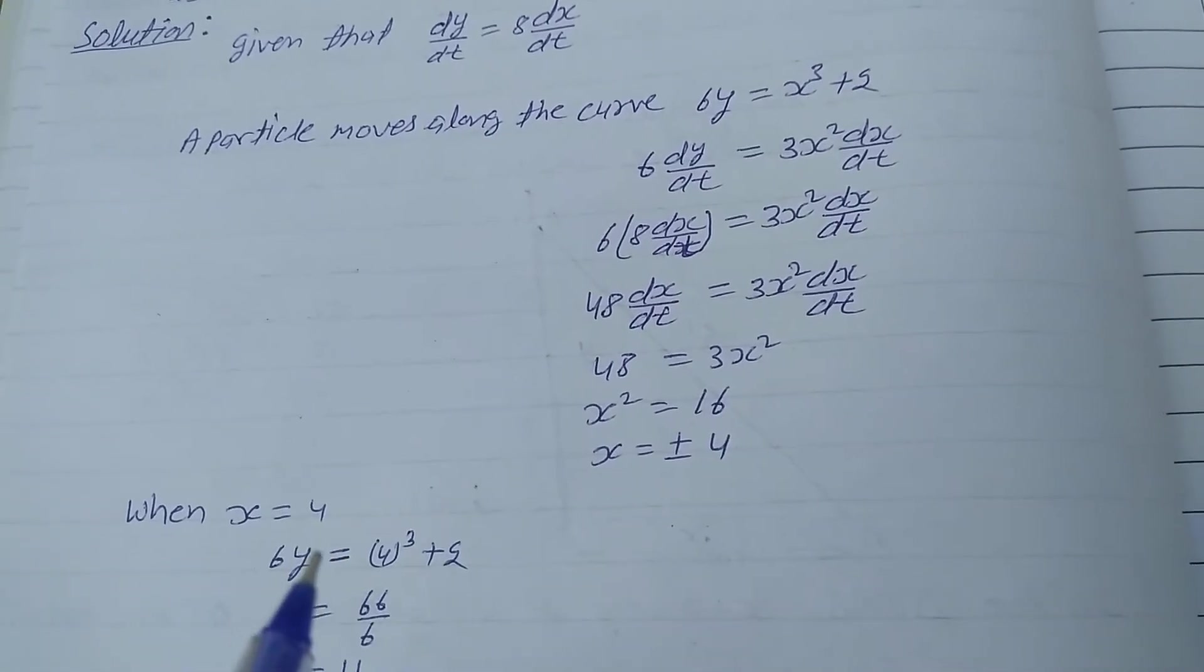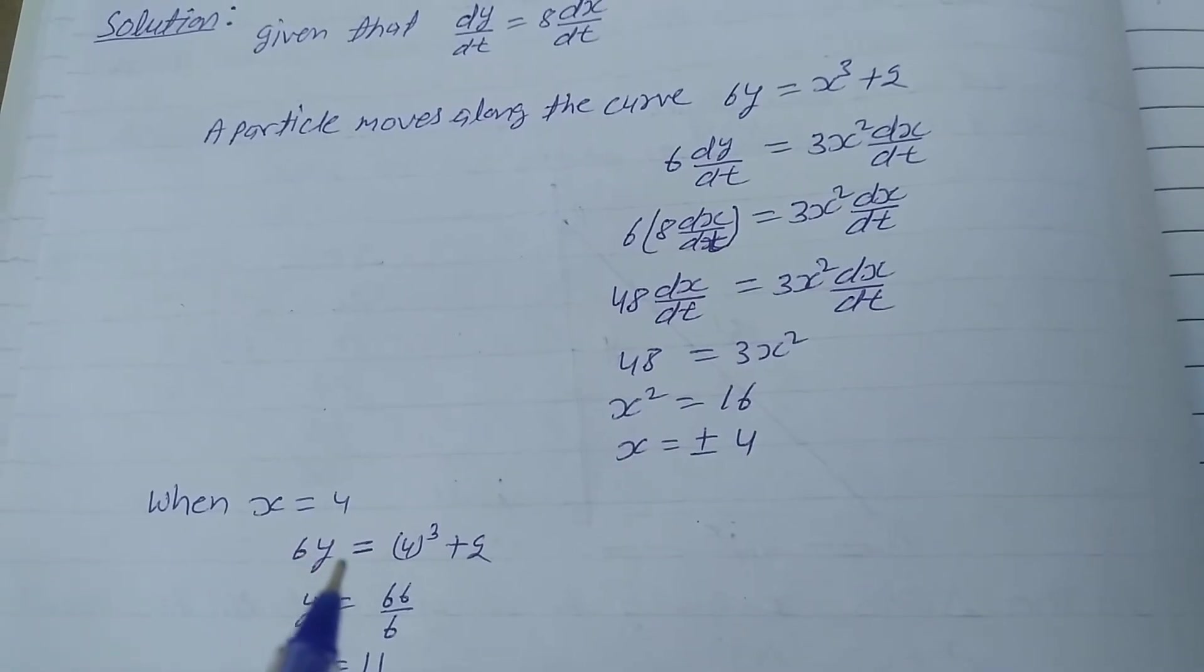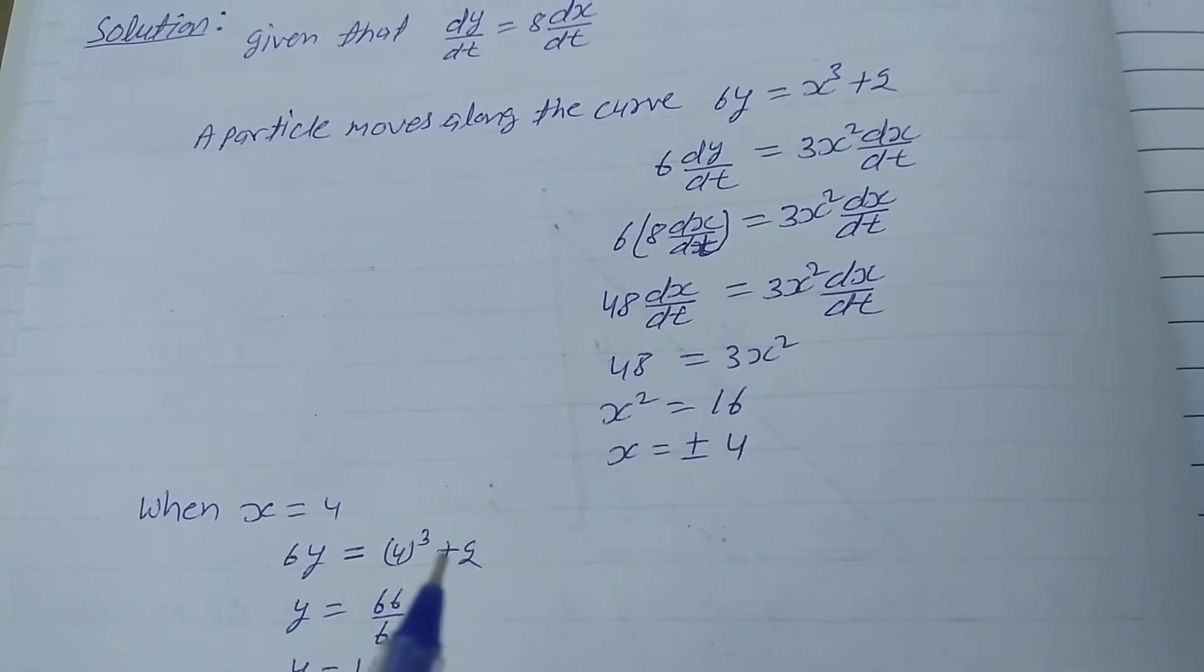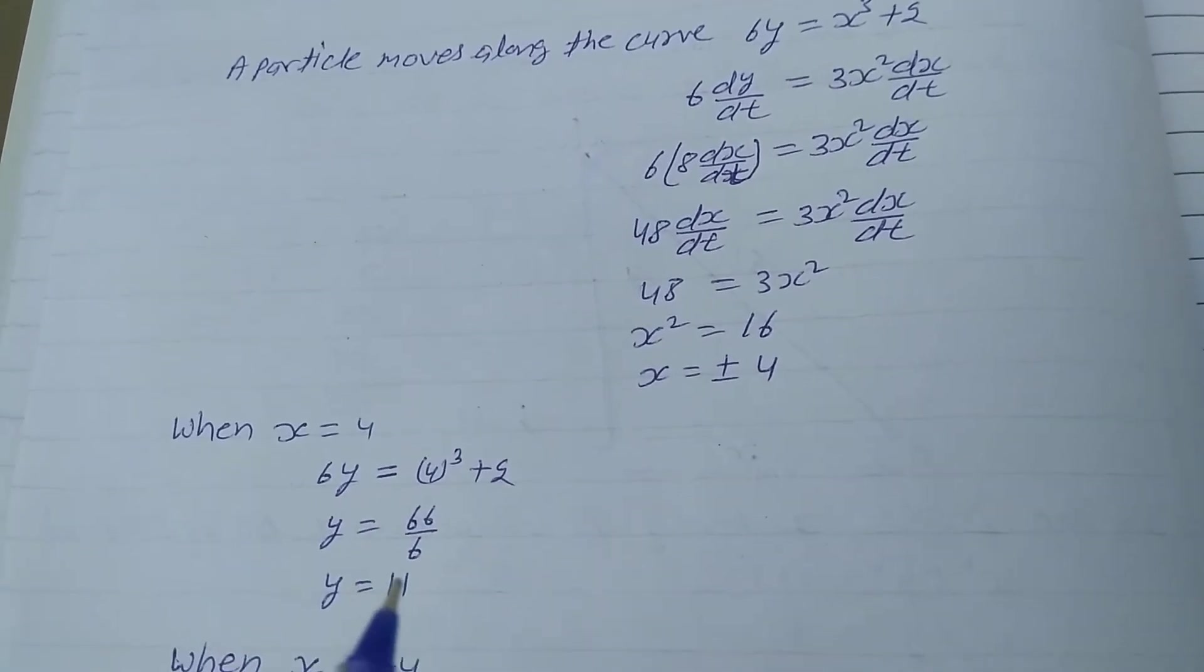When x is equal to 4, put the value in the curve. 6y equals 4 cubed plus 2, so 6y equals 64 plus 2, so y equals 66/6, so y is equal to 11.